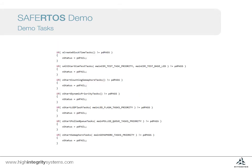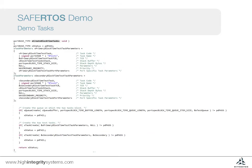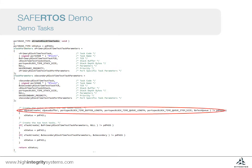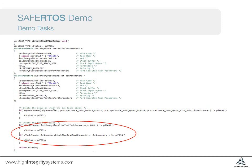Task creation follows a common pattern. Each demo function has a create function which is called during startup. This, in turn, may create a number of tasks for the test function. These tasks only start executing once the scheduler is started. Here we can see an example of a simple create function. This creates two tasks that communicate via a queue. At the start of the function are the task initialization parameters. The queue is then created, and then both tasks. Finally, the function returns. The tasks will only start running later in the program, once the scheduler is started.